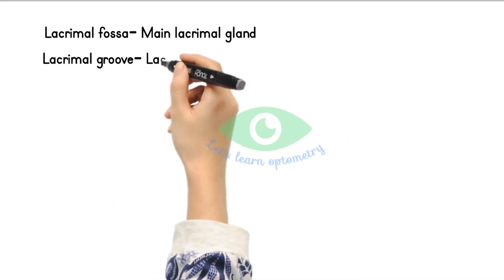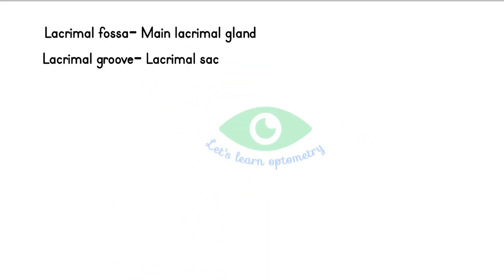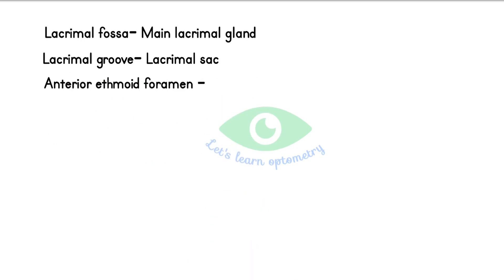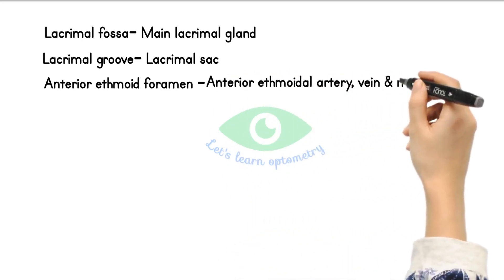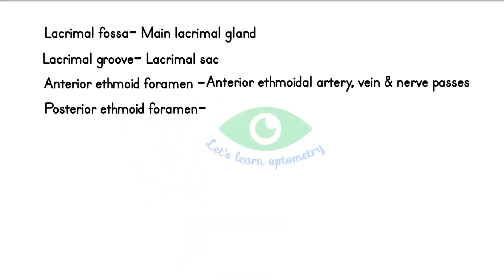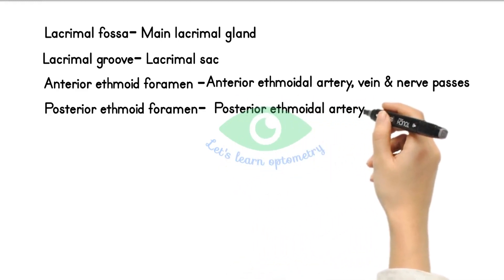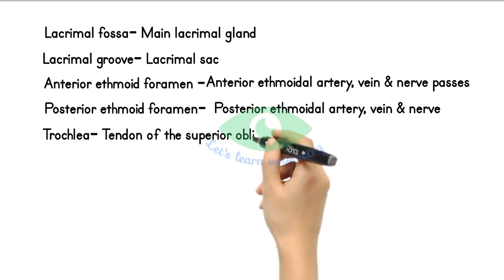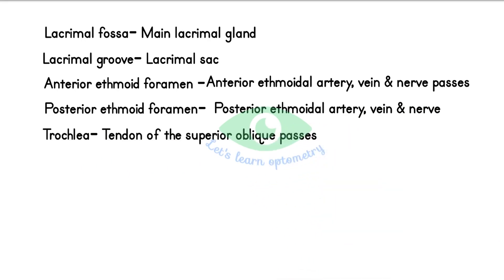The lacrimal groove is placed on the medial orbital wall between the lacrimal bone and the maxilla. It contains the lacrimal sac. The anterior ethmoidal foramen is found at the junction between the superior and medial orbital walls, and it transmits the anterior ethmoidal vein, artery and nerve. The posterior ethmoidal foramen is also found at the junction of the superior and medial orbital walls, and it transmits the posterior ethmoidal vein, artery and nerve. The trochlea is a pulley-like structure at the orbital roof through which the tendon of the superior oblique muscle passes. It is the only cartilage found in the orbit.